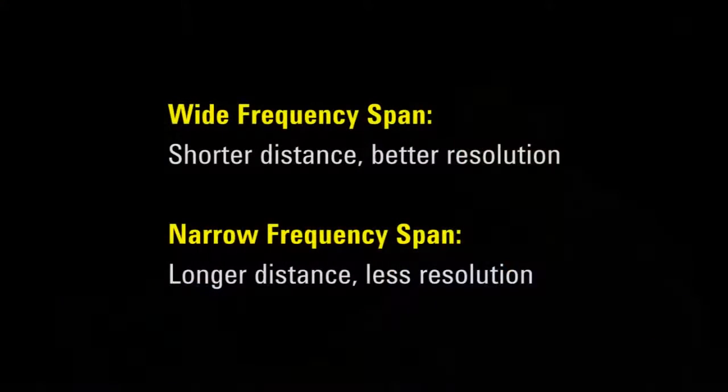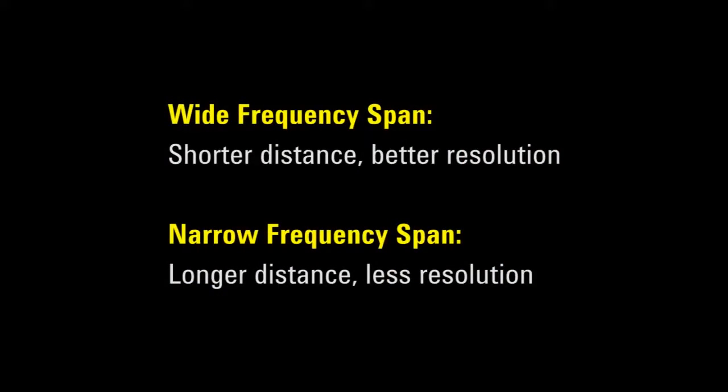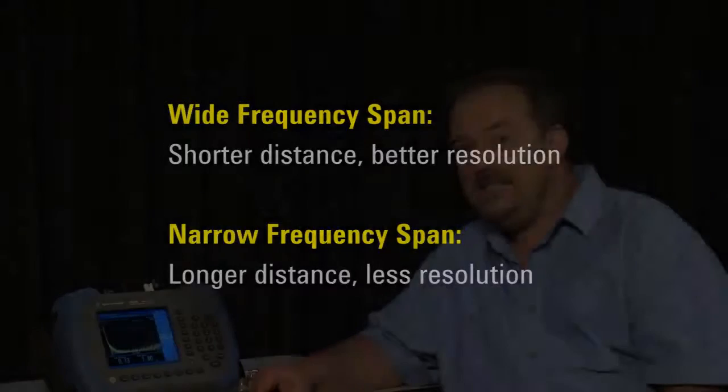In general, a wider frequency span will give you finer resolution but will limit the length of the cable you can measure. Reducing the span on the other hand will allow us to test longer cables but with less resolution. And this is true of all distance to fault measuring instruments, not just the Agilent HSA. And if you have performed distance to fault measurements before, you will know that we need to select the correct cable type to ensure that the distance and return loss scales are accurate.